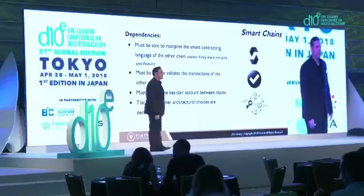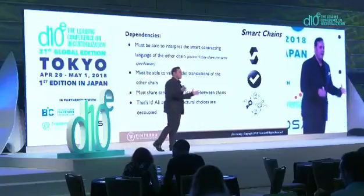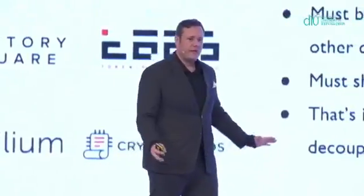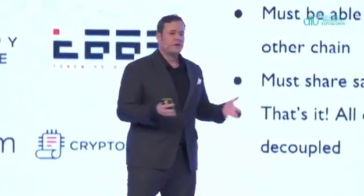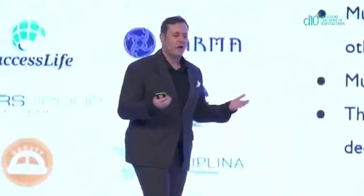What I mean by that is, if I want to run a different consensus algorithm from a different chain, or if I want to choose a different peer-to-peer networking layer or a different database, all of these architectural decisions can be made on different chains.